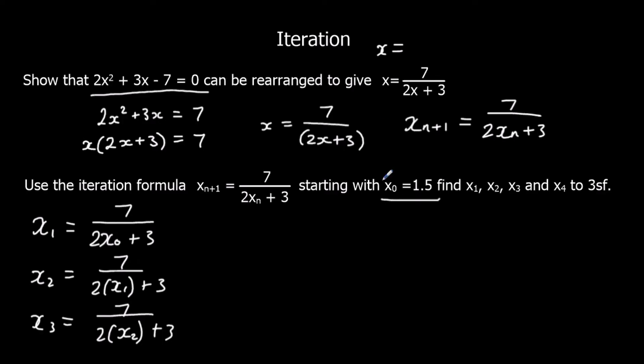So we're going to start with 1.5. So x1 is going to be 7 over 2 times 1.5 plus 3. So we can just type it into the calculator. And to 3 significant figures, we should get out 1.17.